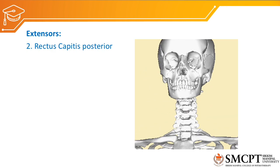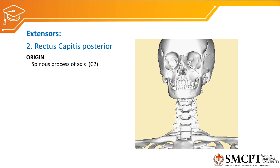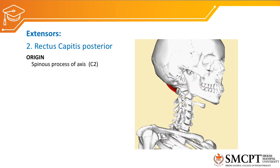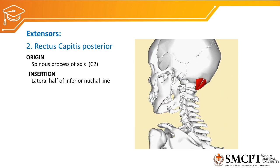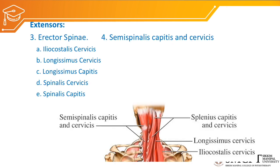Rectus capitis posterior is a small muscle that creates extension at the atlanto-occipital joint. It originates from the spinous process of the axis and inserts to the lateral half of the inferior nuchal line. Other extensors include the erector spinae group: iliocostalis cervicis, longissimus cervicis, longissimus capitis, spinalis cervicis, spinalis capitis, semispinalis cervicis, and semispinalis capitis.